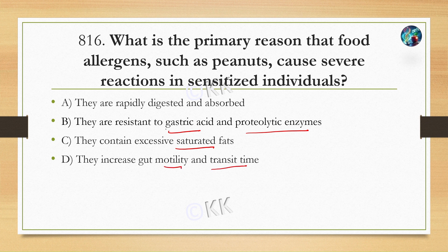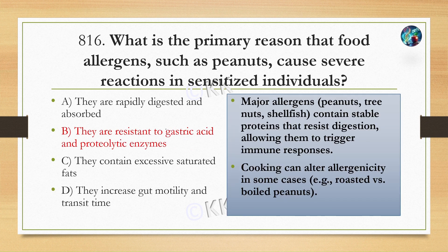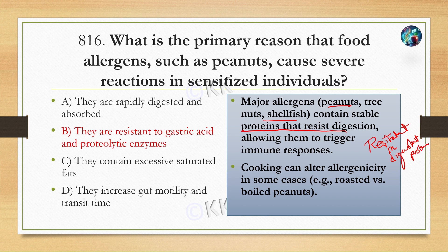The correct option is Option B — they are resistant to gastric acid and proteolytic enzymes. Major allergens such as peanut, tree nuts, and shellfish are generally stable proteins resistant to digestive degradation, which allows them to trigger stronger immune responses. This allergenicity can be altered by cooking; roasting or boiling can reduce it.